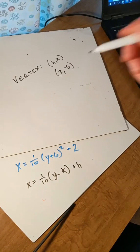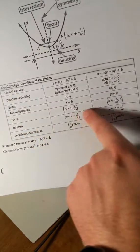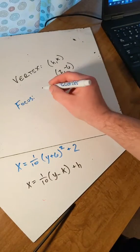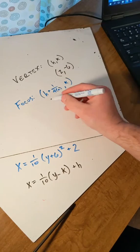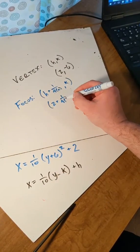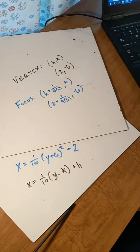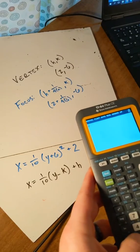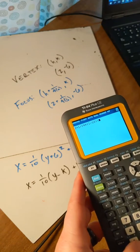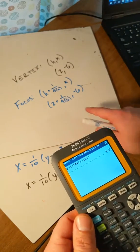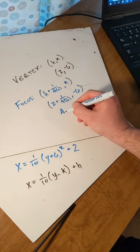And then we've got to get the focus. We've got to double-check here because we have a different equation. For an x equals, the focus is at h plus 1 over 4a, k. So h is 2, plus 1 over 4 times 1 tenth, and k is negative 6. That means 2 plus 1 divided by 4 times 1 divided by 10. I'll plug that into the calculator — that's 2 plus 2.5, which is 4.5. So our focus is at 4.5, negative 6.